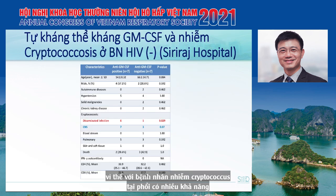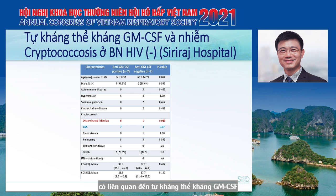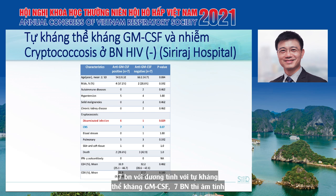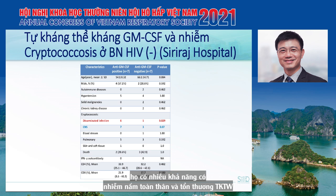Pulmonary cryptococcosis is more likely to occur in non-HIV patients. One of our studies shows that cryptococcosis in non-HIV patients is associated with an autoimmune condition called anti-GM-CSF autoantibody syndrome. Among 14 patients, 7 with positive anti-GM-CSF and 7 with negative anti-GM-CSF, pulmonary involvement was found in 5 with positive and 3 of 7 with negative. Patients with positive anti-GM-CSF are more likely to have disseminated disease, CNS disease, and higher mortality.